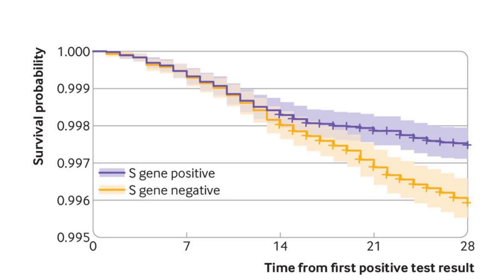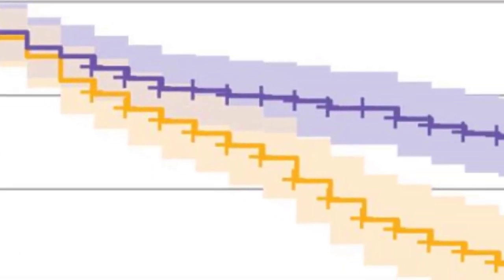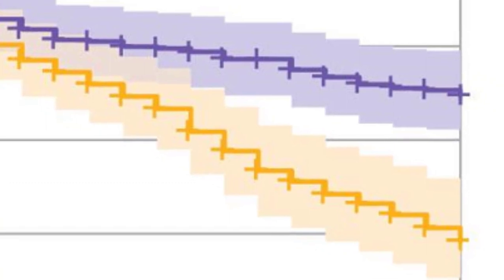Let's look at some more examples. Here we compare two populations, S-gene positive and S-gene negative, and how long they live after testing positive for COVID-19. From looking at the curves, people who were S-gene positive lived longer after the first positive COVID test result than people who were S-gene negative. Notice that these aren't smooth curves — they are actually more like steps consisting of horizontal and vertical lines. When there is little data, survival curves look like stair steps. If there is a lot of data in survival analysis, they might look more like curves because it is hard to see all the steps.